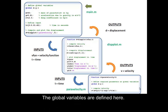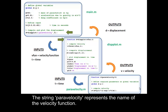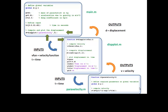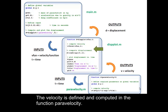The global variables are defined here. The function DISPLOT is called with inputs PARA VELOCITY and TIME. The string PARA VELOCITY represents the name of the velocity function. The function DISPLOT integrates the velocity function to find and plot displacement. The velocity is defined and computed in the function PARA VELOCITY.